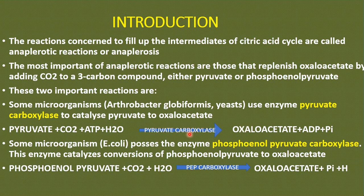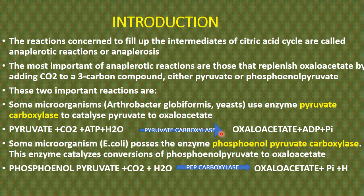Acetyl-CoA acts as a positive modulator to activate this enzyme. When excess acetyl-CoA accumulates in the cell, it accelerates the enzyme so that excess oxaloacetate is formed to accept the excess acetyl-CoA, allowing them to enter the TCA cycle as citrate.